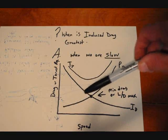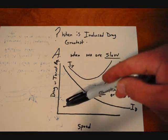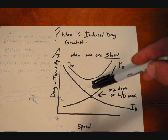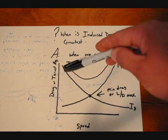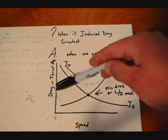So I have the drag curve drawn here. We have our induced drag here, we have our parasitic drag here, we have our total drag here, and you can see that we are way up high when we are really slow. This is speed, this is drag or thrust required.